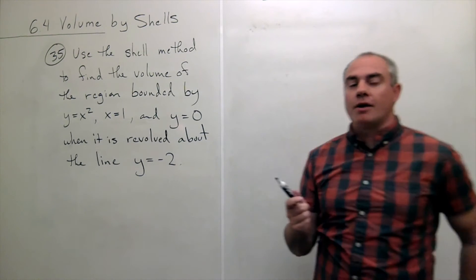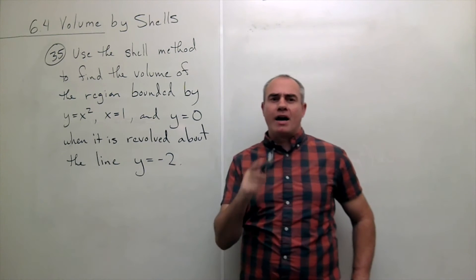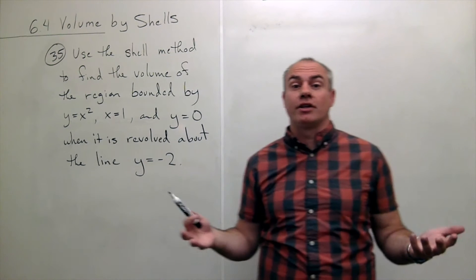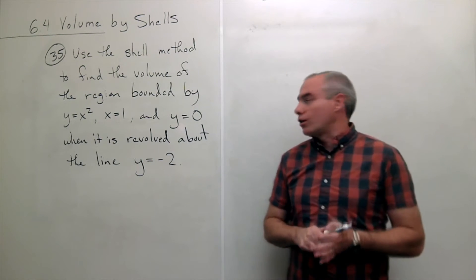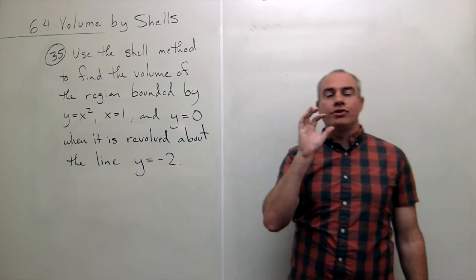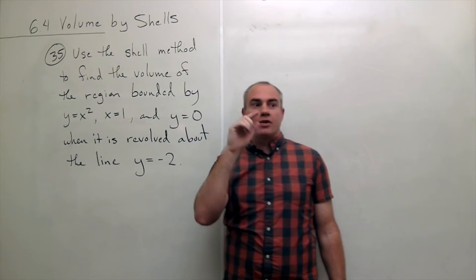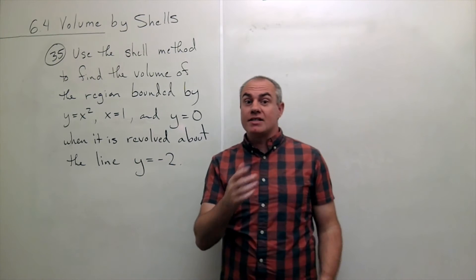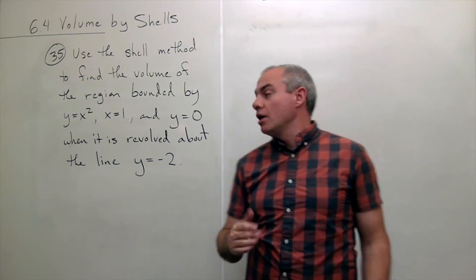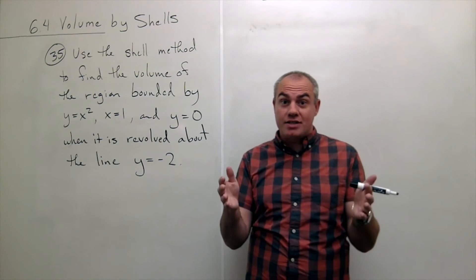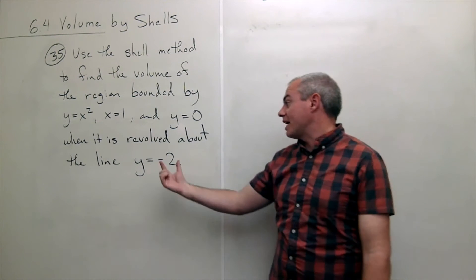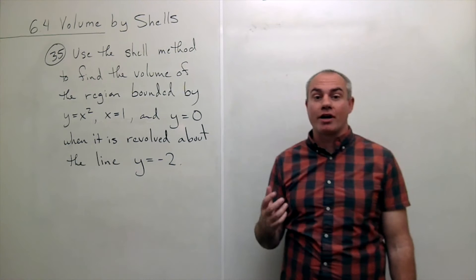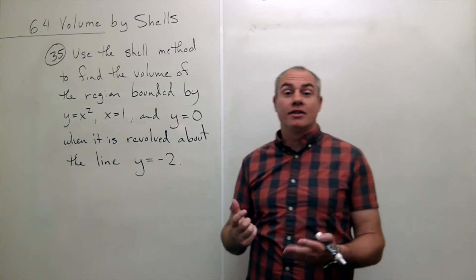These are interesting problems where we're revolving a region about a line that is not x equals 0 and not y equals 0. In other words, it's not the x-axis, it's not the y-axis, it's some other line. When we did problems that were revolved around the axis, typically the radius, that r of x piece, is either x or y depending on what we're integrating with respect to. When we do other lines, typically that radius is not just x or just y and we have to make an adjustment for the fact that we're not revolving around an axis.